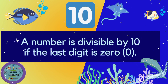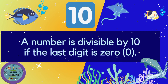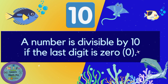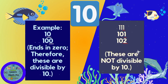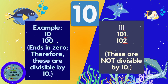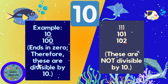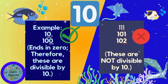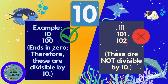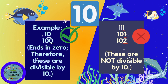A number is divisible by 10 if and only if the last digit is 0. Napakadali nito — 10, 100, 1,000, 10,000 are all divisible by 10. 20, 40 — divisible by 10. But 111, 101, or 102 are not divisible by 10. Basta ends in 0, divisible by 10.